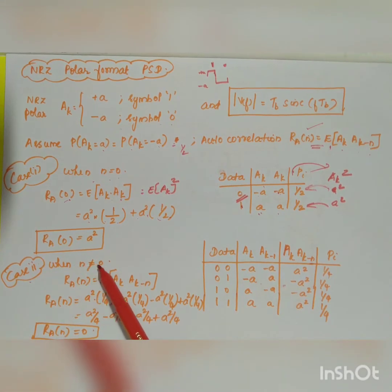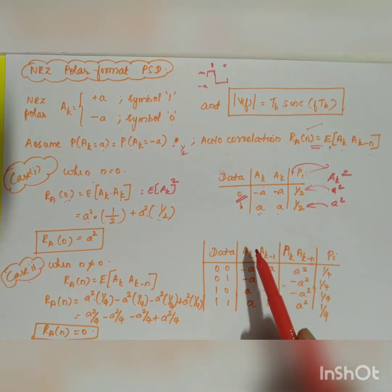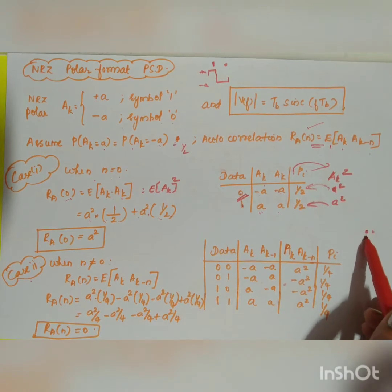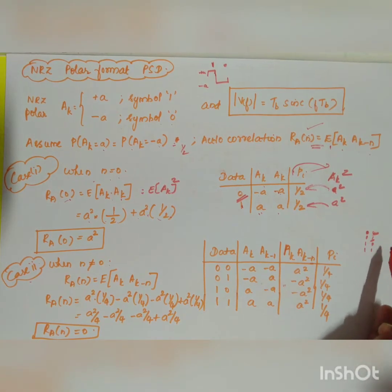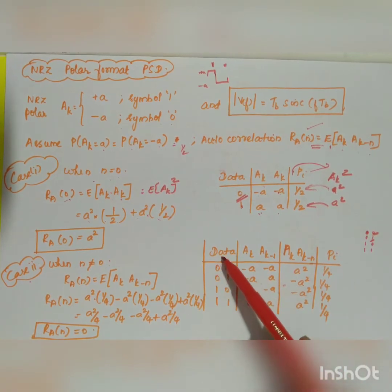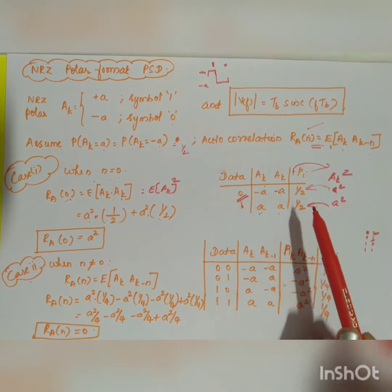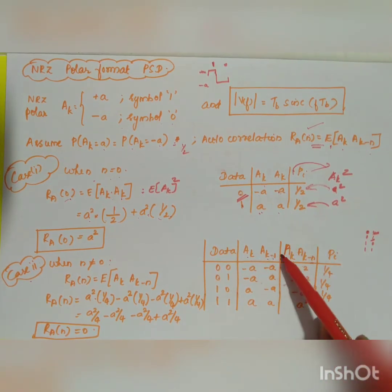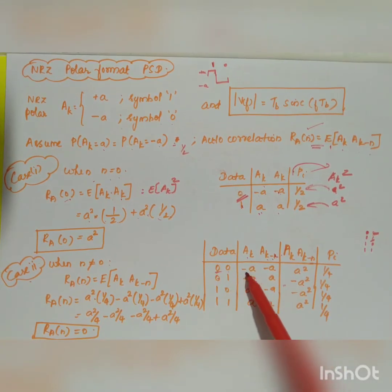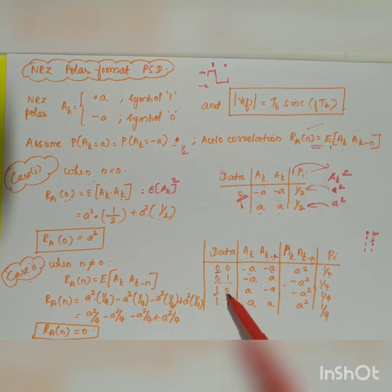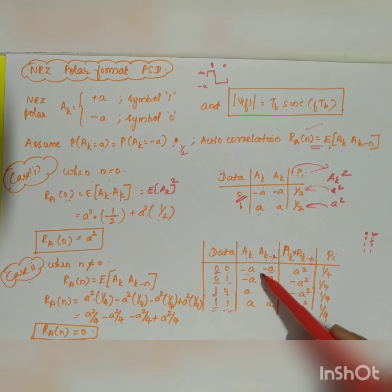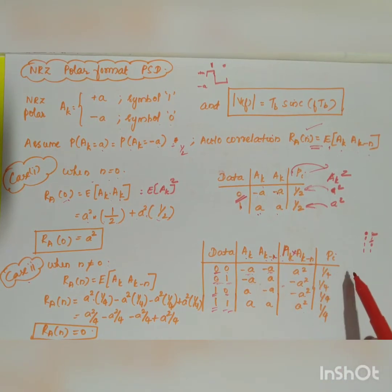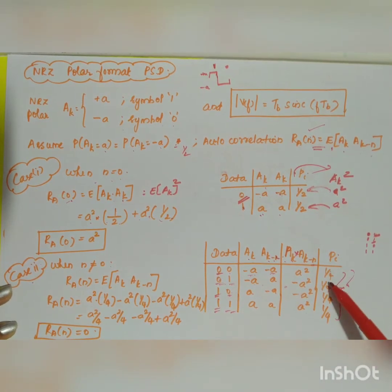For Case 2 when n ≠ 0, there are four equally probable combinations: 00, 01, 10, and 11. Replacing 0 with -a and 1 with +a gives the pairs: (-a, -a), (-a, +a), (+a, -a), and (+a, +a). The products a_k × a_{k-n} are therefore: +a², -a², -a², and +a² respectively, each with probability 1/4.